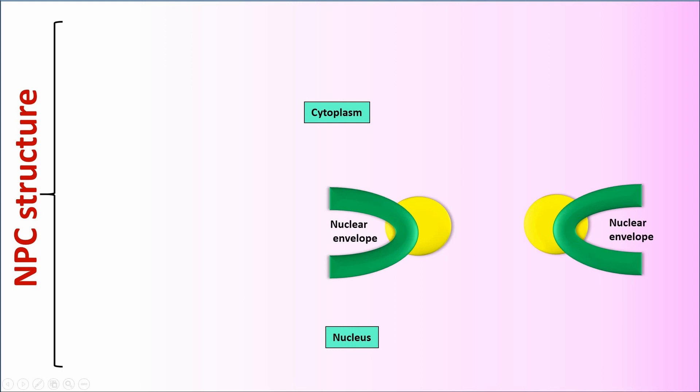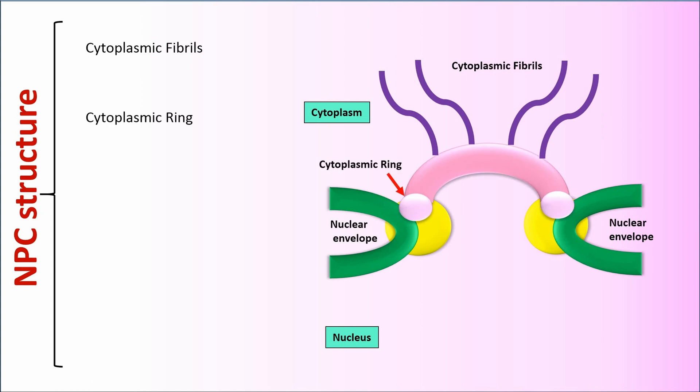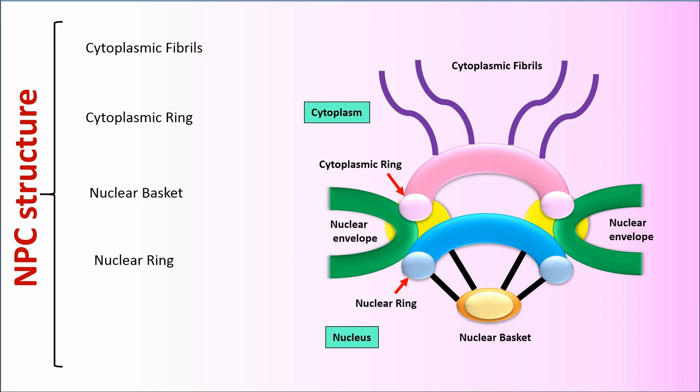NPC has five parts in its structure: cytoplasmic fibrils, cytoplasmic ring, nuclear basket, nuclear ring, and central pore.